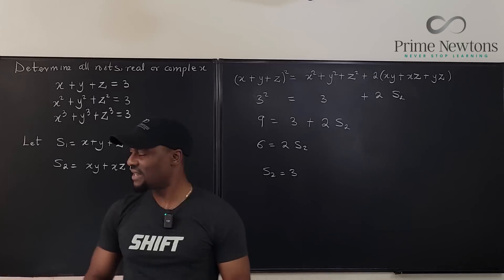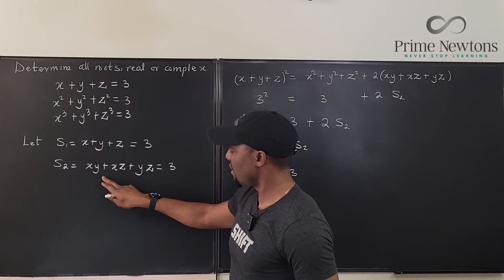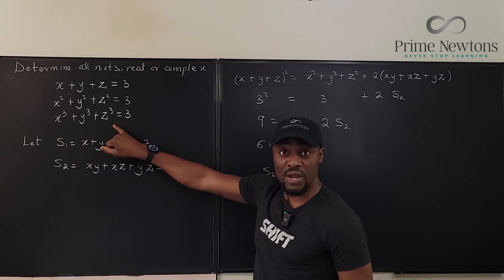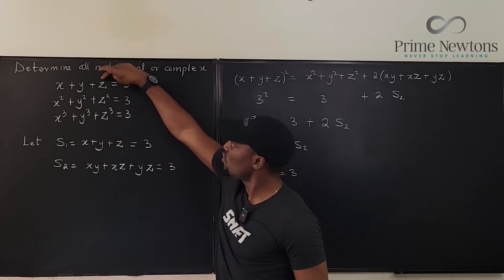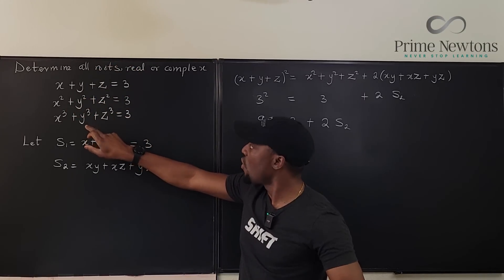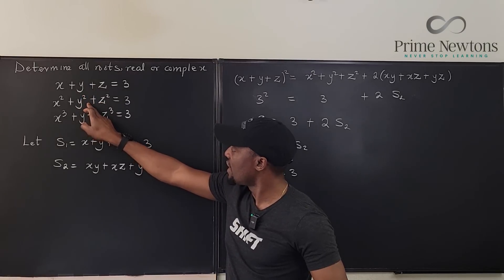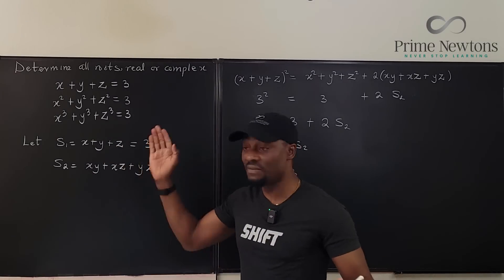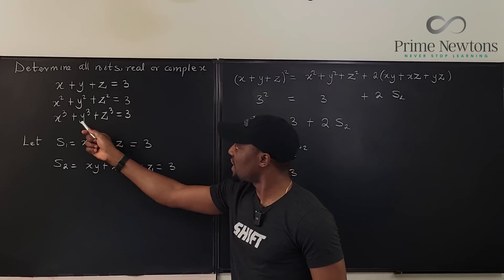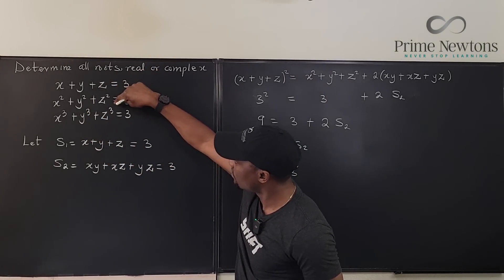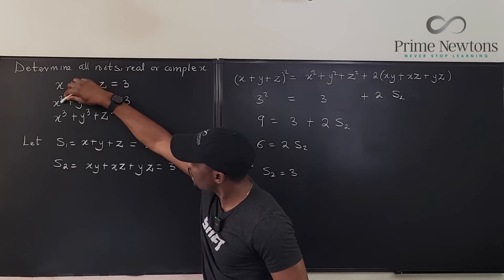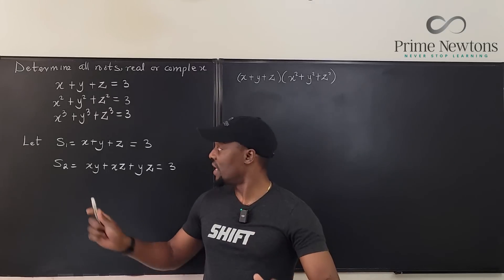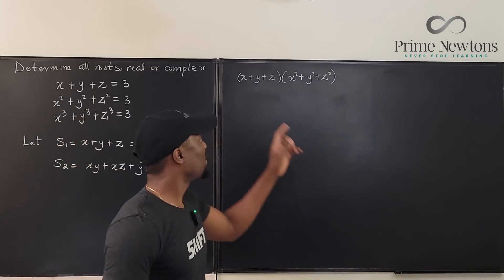Now I want to generate the third equation from the first. I could cube the first equation to get cubic terms, or multiply the first equation by the second. Multiplying allows x·(x²+y²+z²) to generate x³, and similarly y³ and z³. Other terms will appear that we'll handle. Let's generate x³, y³, z³ by multiplying the first two equations.